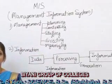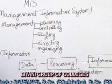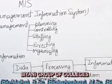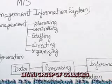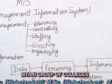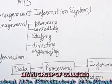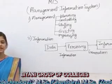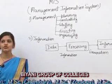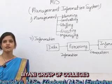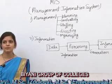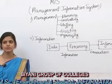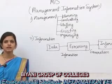MIS is a planned system of controlling and storing in the form of information. MIS provides information that organizations need to manage. MIS provides a computer-based system used for managing three primary components: first is technology, second is people, third is data.